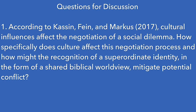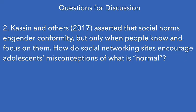I now offer two questions for discussion. First, according to Casson, Fine, and Marcus, cultural influences affect the negotiation of a social dilemma — how specifically does culture affect this negotiation process, and how might the recognition of a superordinate identity in the form of a shared biblical worldview mitigate potential conflict? Second, Casson and others asserted that social norms engender conformity but only when people know and focus on those norms — how do social networking sites encourage adolescents' misconceptions of what is actually normal?